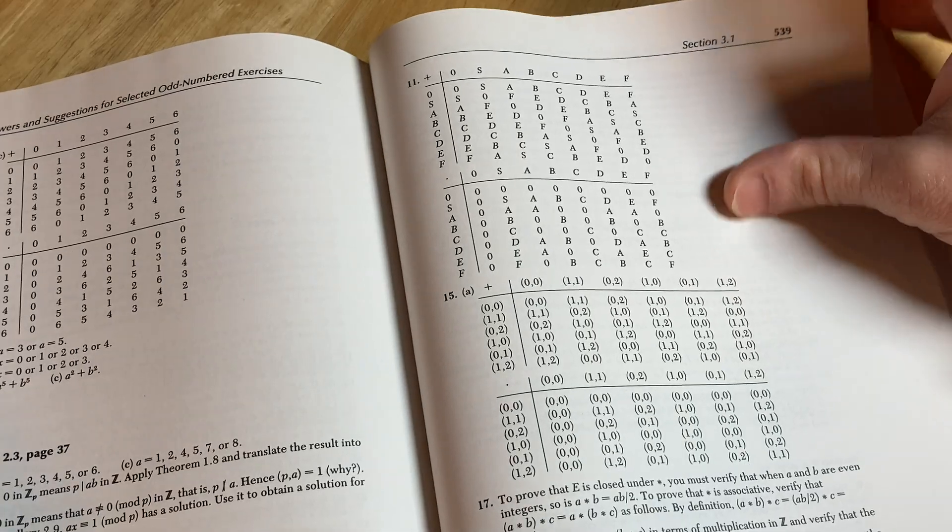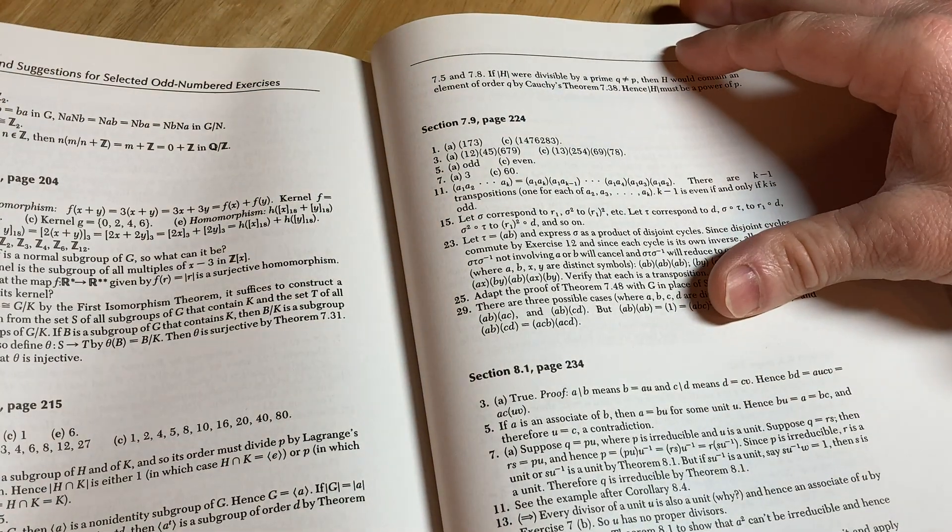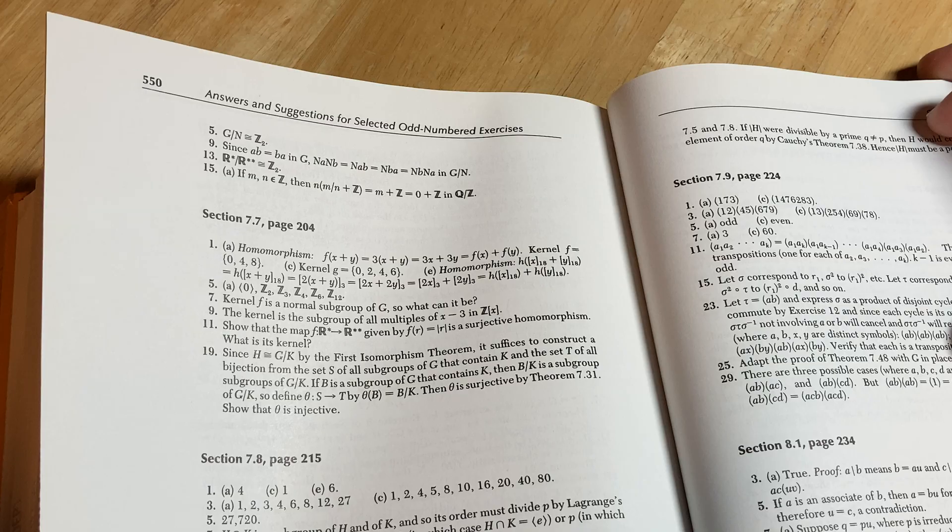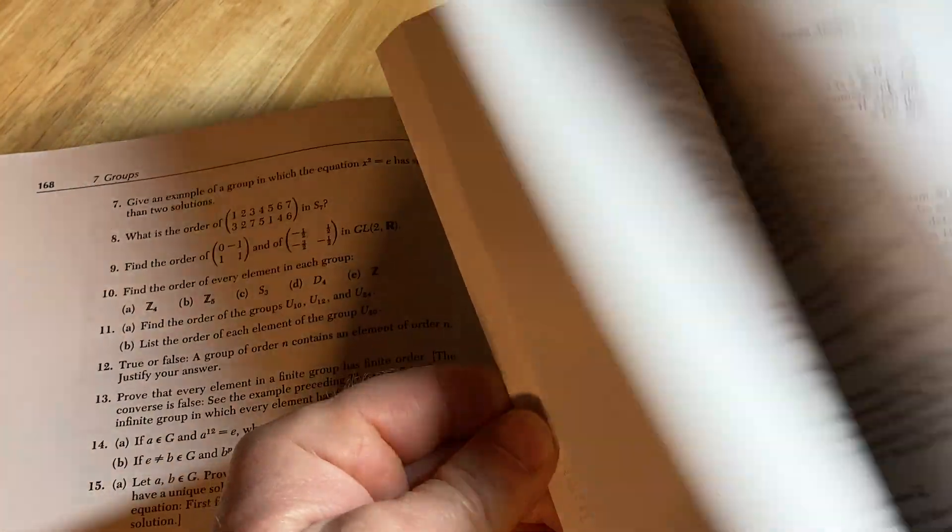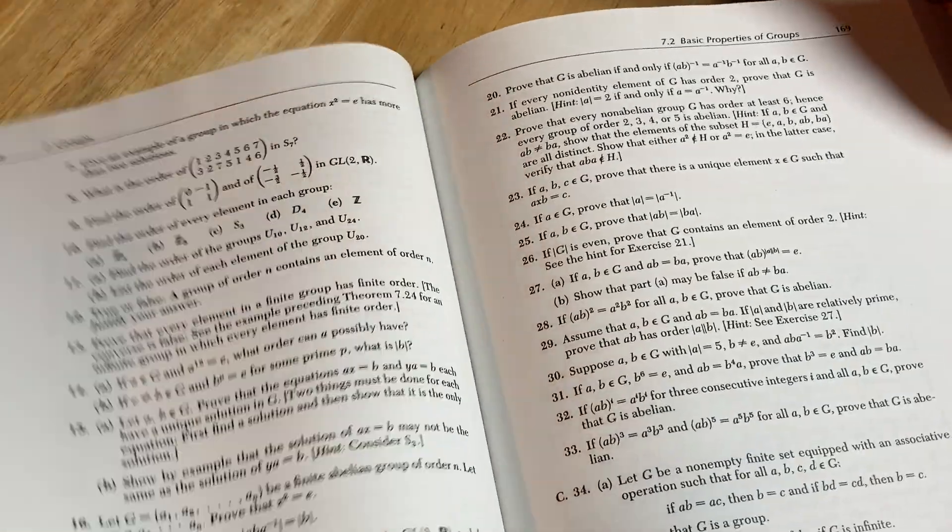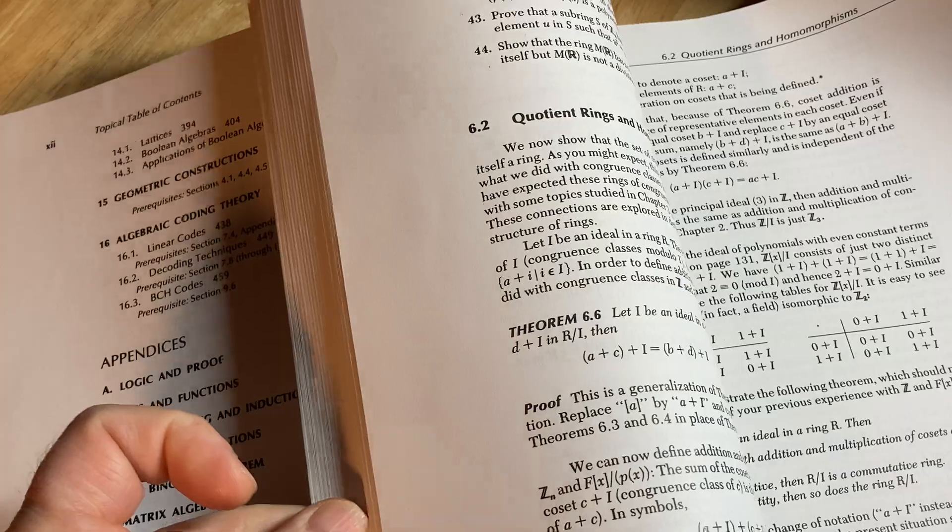And then answers in the back to some of the exercises, to selected odd-numbered exercises. So not all of them. Notice number three is missing. So it doesn't have all the answers. This is the biggest con of these books. It's what they don't have - they're missing answers a lot of times. But this one has great exercises, good explanations, good for a beginner who wants to learn.